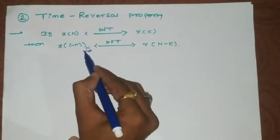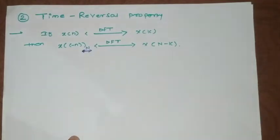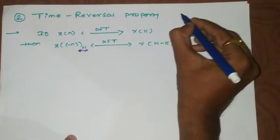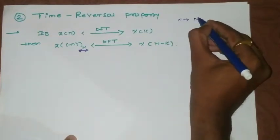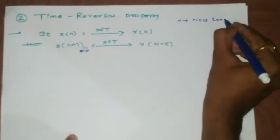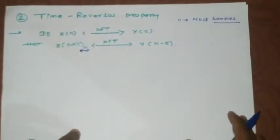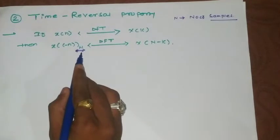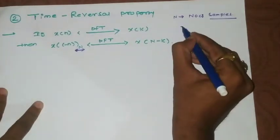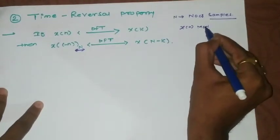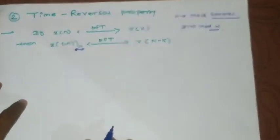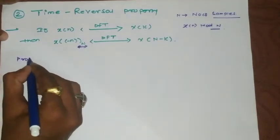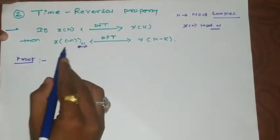The reason we write 'base N' is that the Discrete Fourier Transform shows periodicity with respect to N, which is the number of samples. We will discuss circular shift and modulo N in detail in a separate video. In short, x(-n) base N simply means x(n mod N). Now let us prove this property.